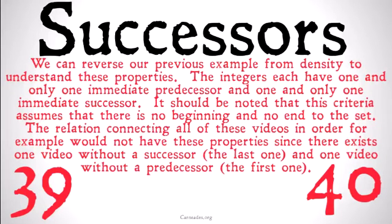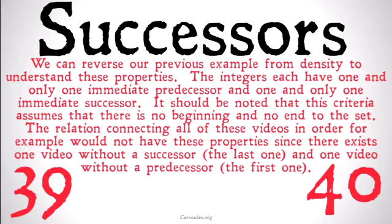It should be noted, importantly, that this criteria assumes that there is no beginning and no end to our set. Because we're saying that all instants or all numbers have a predecessor, that means there can be no starting instant. And since all instants also have a successor, there can be no ending instant. The relation connecting all of these videos in order, for example, would not have these properties, since there exists one video without a successor — the last one — and one video without a predecessor — the first one — even though these videos are not going to be dense either.